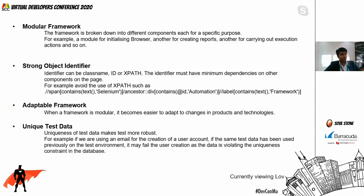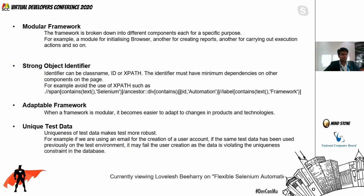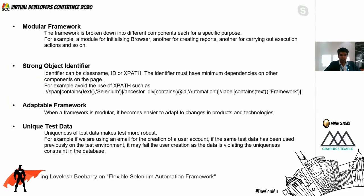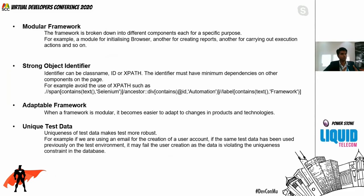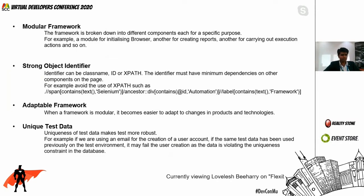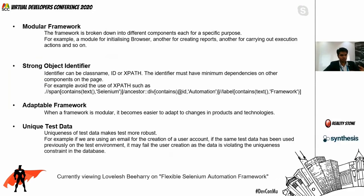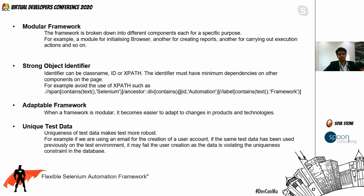The next guideline is an adaptable framework — when it is modular, it becomes easy to change. Unique test data is also important. On the long term, if we're creating a user on a platform and there's a database constraint that the username or email must be unique, using the same test data repeatedly will definitely fail at some point. We have to make sure we have unique test data, and we can develop methods to generate that data dynamically.